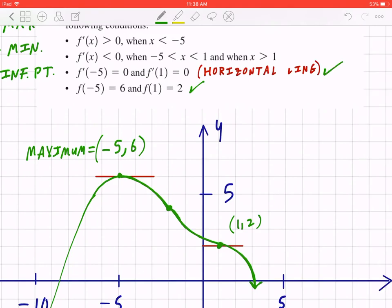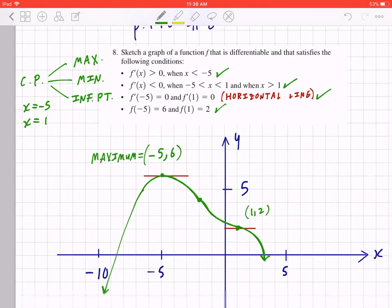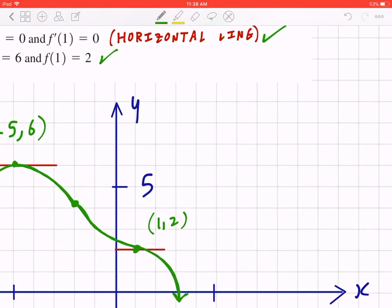At both negative 5 and 6, 1 and 2, the function is decreasing between negative 5 and 1. And when it's greater than 1, just like that, and this becomes f of x.